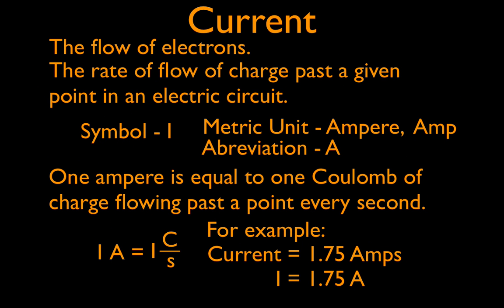Current is what flows through the circuit. It's the flow of electrons through a circuit, just like water is what flows through a stream or through the pipes in our house. More specifically, current is the rate of flow of charge past a given point in an electric circuit. Rate introduces the time factor to this definition, so it's the amount of charge flowing past a given point per unit of time — usually per second — and the unit of charge is the coulomb, so it's coulombs per second.